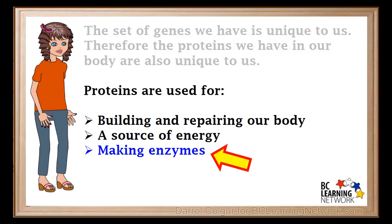Enzymes are substances in our body which help chemical reactions take place. Enzymes are all proteins. At any particular time, billions of reactions are taking place in our body. These can include the reactions needed for things like digestion of food, cellular respiration, and many more. These reactions do not work properly unless we have the required enzyme for each reaction.